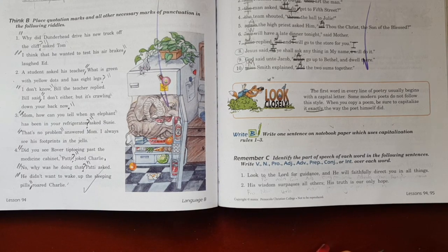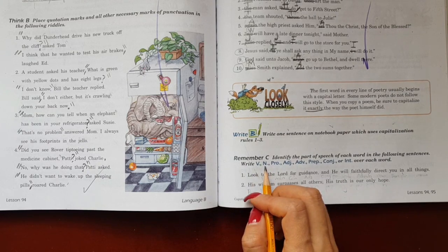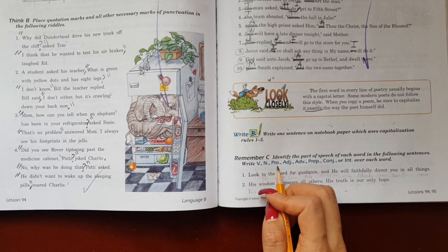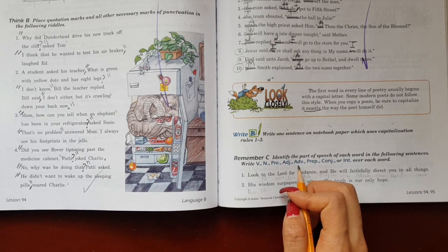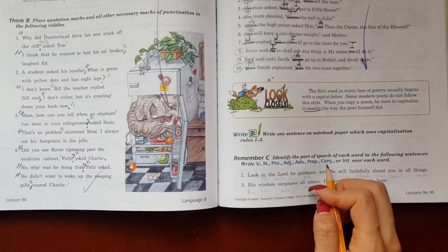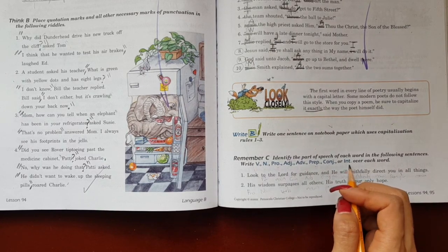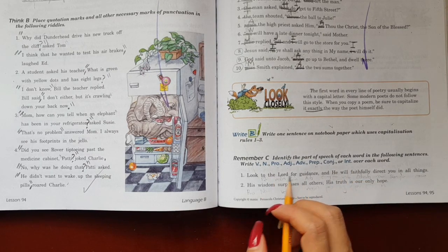Now, remember C. Identify the part of speech of each word in the following sentences. Write V for verb, N for noun, Pro for pronoun, Adj for adjective, Adv for adverb, Prep as a preposition, Conj as a conjunction, or Int as an interjection. So here we have the eight parts of speech.